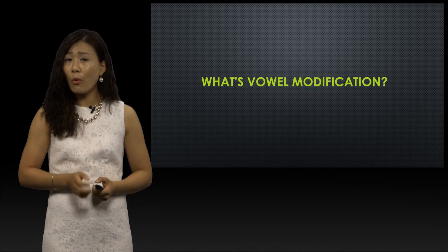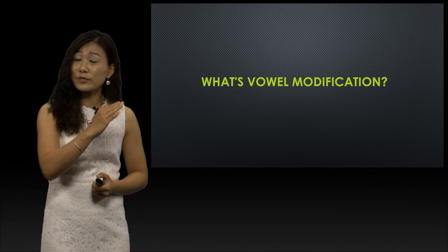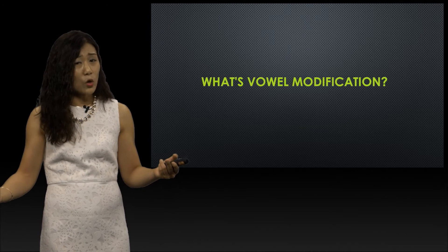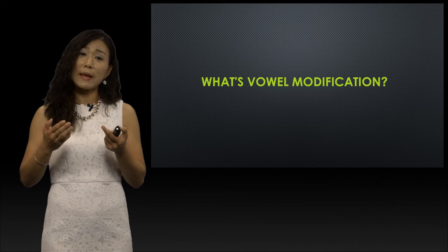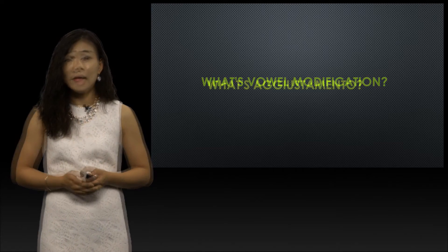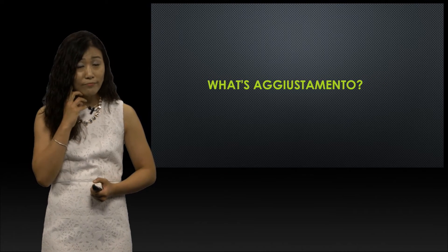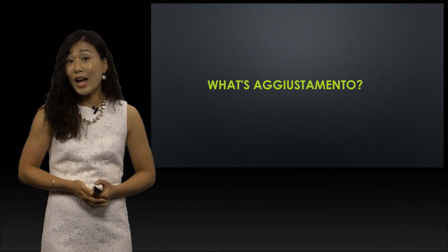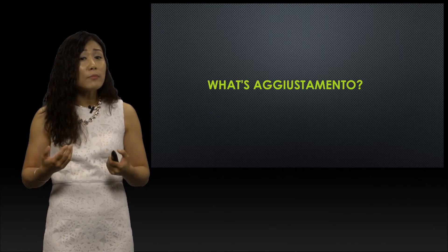First, what is vowel modification? As a singer approaches the primo passaggio and then again at each successive passaggio, certain vocal adjustments are necessary in order for the tone to remain consistent and for there to be no audible breaks in the voice. As pitch ascends, the singer must open the mouth and drop the jaw. This gradual adjustment of the mouth and jaw is called ajustamento, and it follows a natural vowel modification process.